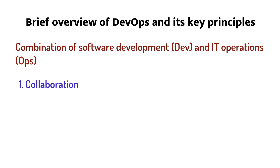Collaboration: DevOps emphasizes collaboration between development and operations teams, as well as other stakeholders such as quality assurance and security teams. Automation: DevOps relies heavily on automation to streamline the development and delivery process. This can include automated testing, deployment, and monitoring, as well as tools for version control, configuration management, and infrastructure as code.